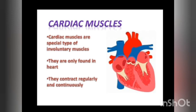The third type of muscle is the cardiac muscle. Cardiac muscles are a special type of involuntary muscles and they are only found in the heart. They contract regularly and continuously to supply blood to different parts of the body.